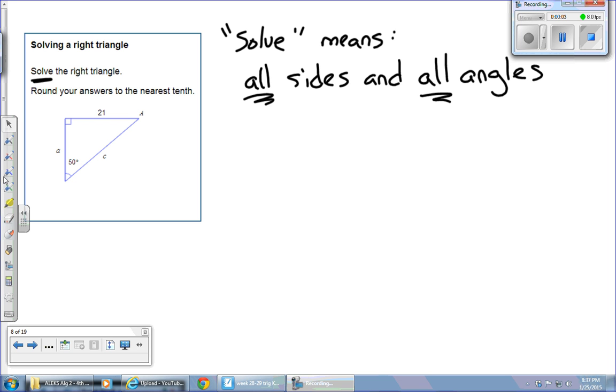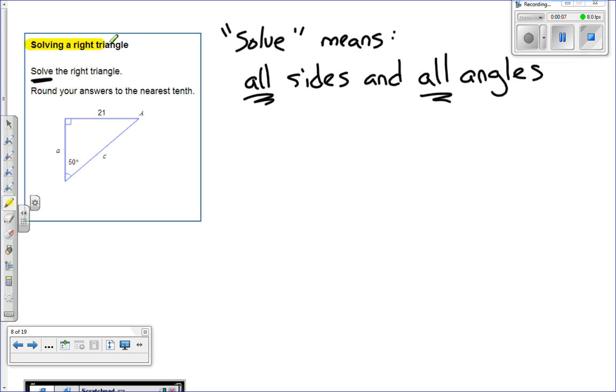Okay, so the next topic we're going to do is, well, it's going to take you a little bit of time. It just says solve a right triangle. Simple title, a little bit more work involved. When it says solve the right triangle, solve means all sides and all angles. So I need to know it.